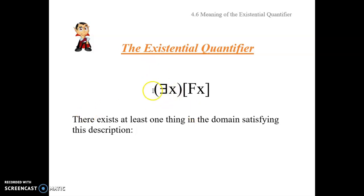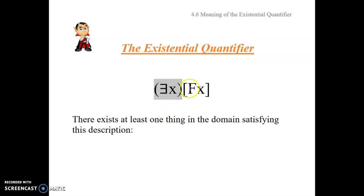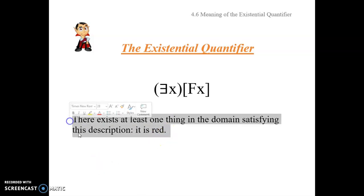So that's just this part: there exists at least one thing in the domain. If you need to know about domains, check out 4.4 — that's where that concept is first introduced with respect to the meaning of the universal quantifier. There exists at least one thing in the domain satisfying this description: it is red. That's going to be our official way of rendering it, and I think it's a very helpful way.